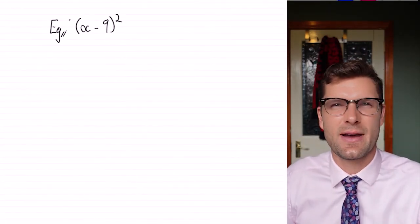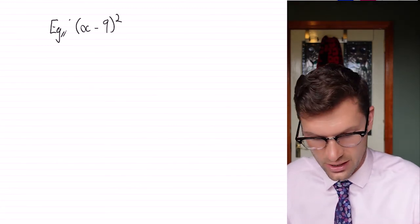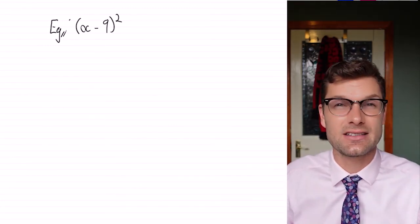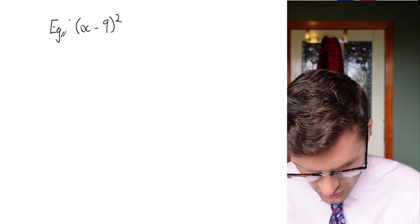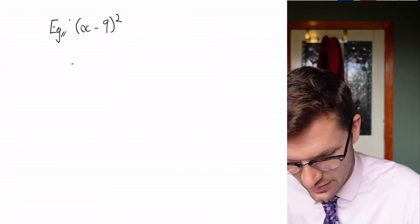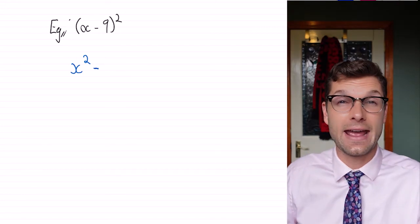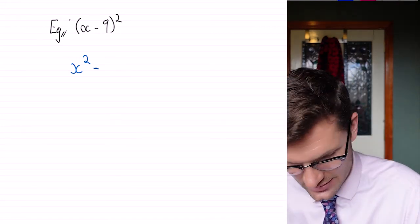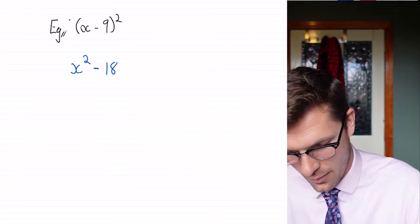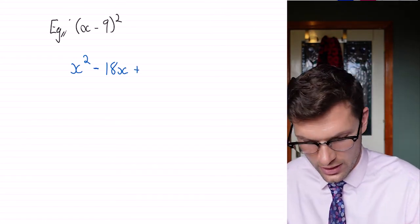So we're just going to do an example just to make sure we're on top of it, but it's very similar. So for this one, we've got x minus 9 all squared. So we can straight away say that this is going to be x squared minus, it's going to be 9x times by 2. So this is 18x plus 9 squared, which is 81.